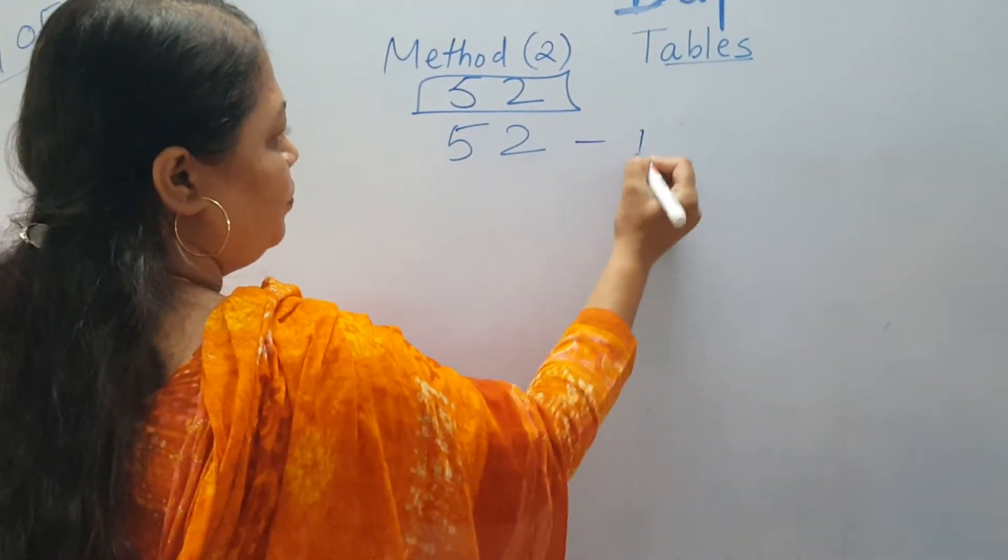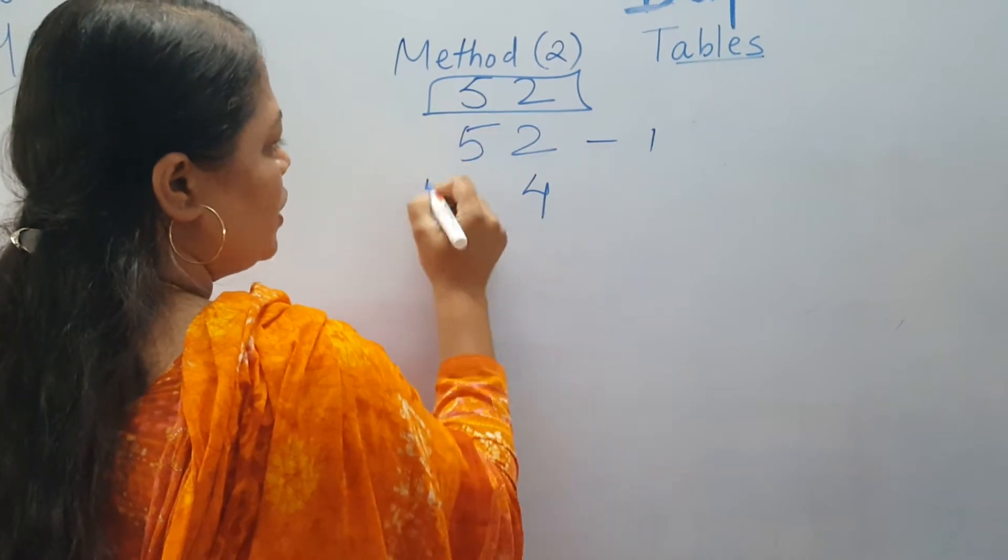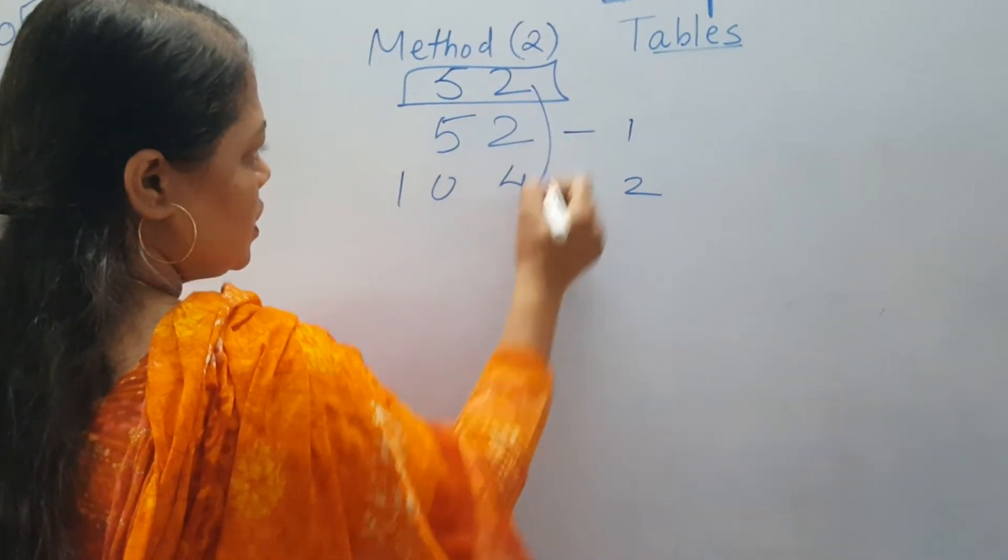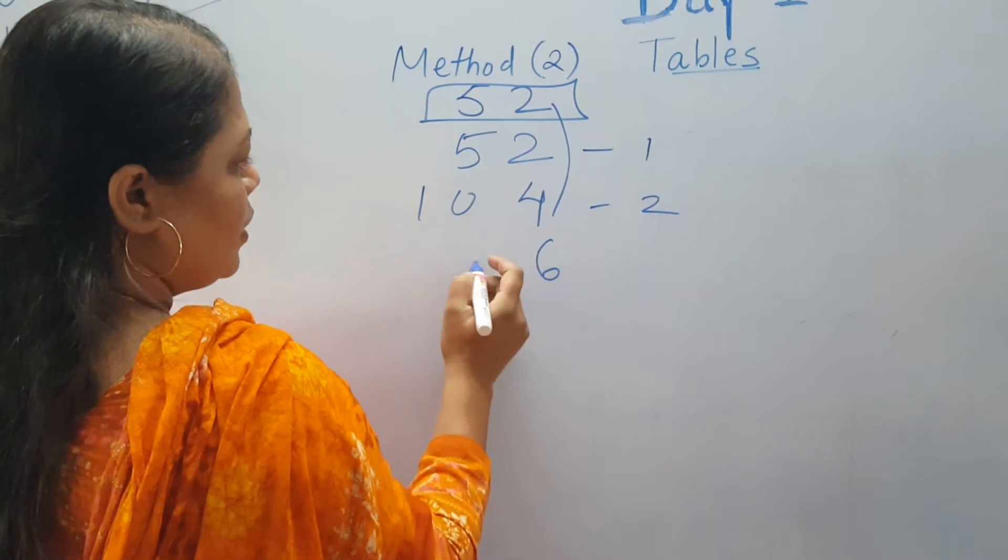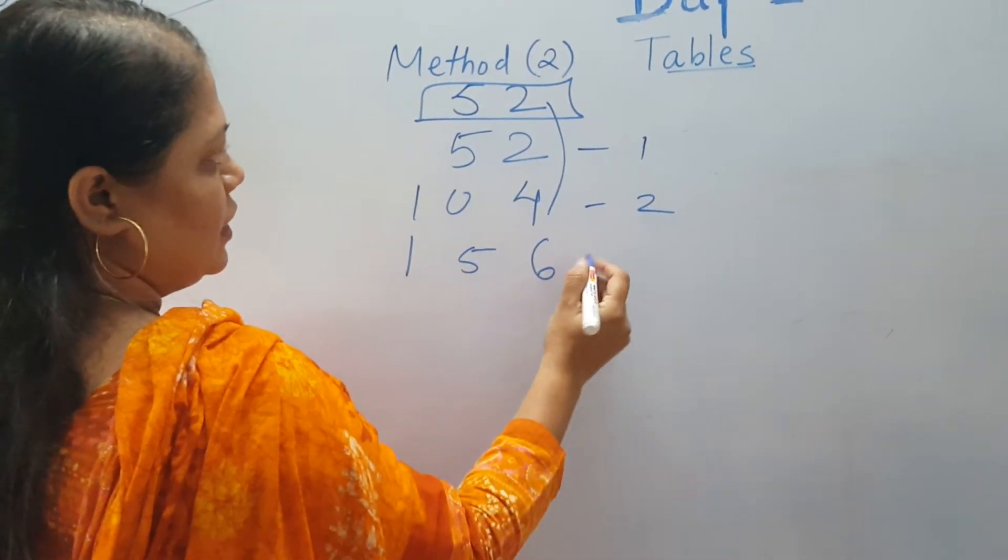2 plus 2 is 4. 5 plus 5 is 10. 2 plus 4 is 6. 5 plus 0 is 5. 1 as it is.